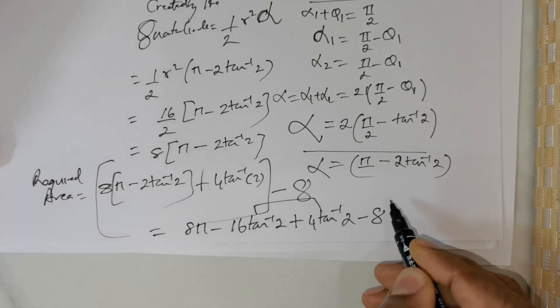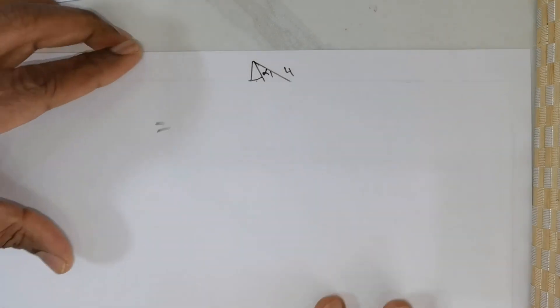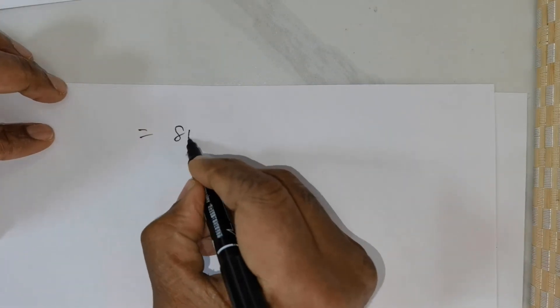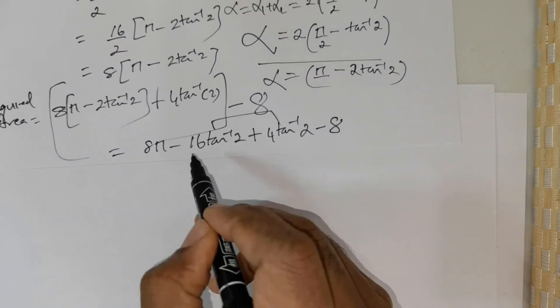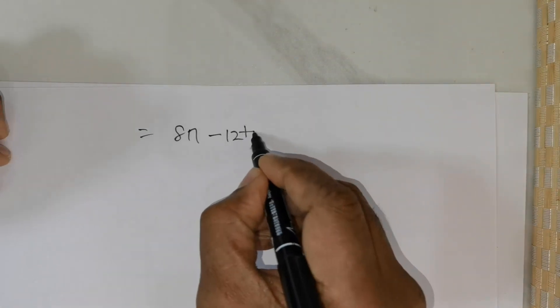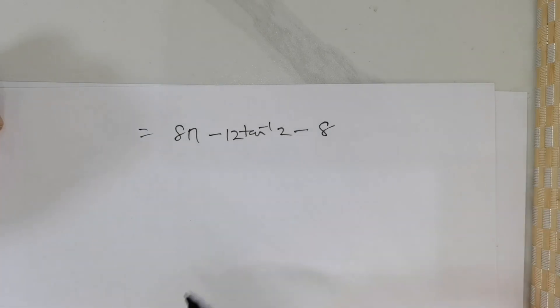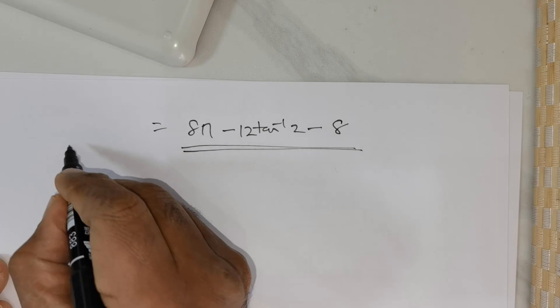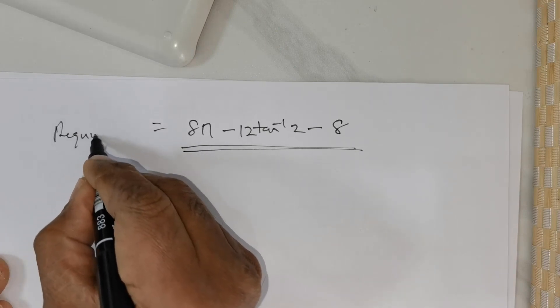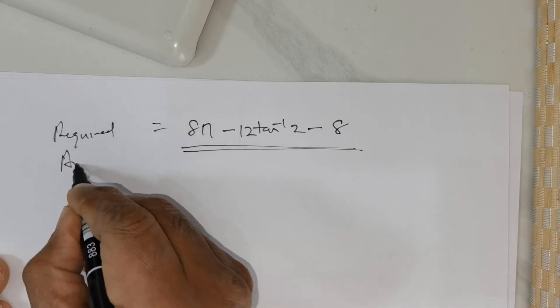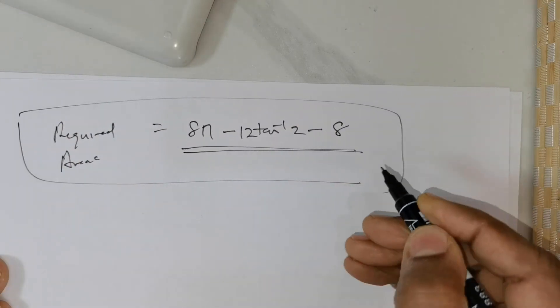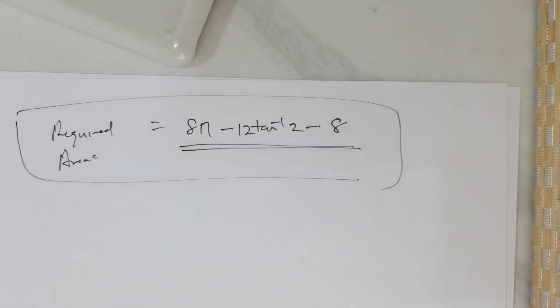These two terms can be combined: −16·tan⁻¹(2) + 4·tan⁻¹(2) = −12·tan⁻¹(2). So the required area = 8π − 12·tan⁻¹(2) − 8. This is the right place for us to stop. Please like, share, and subscribe to our channel. Until we meet again, thank you everybody.